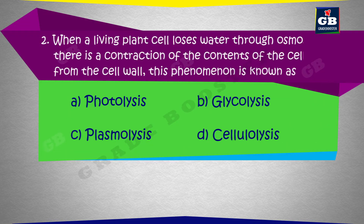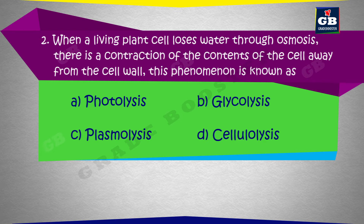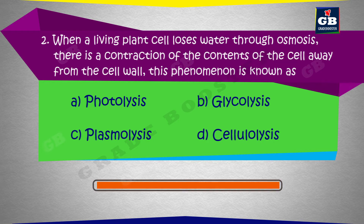When a living plant cell loses water through osmosis, there is a contraction of the contents of the cell away from the cell wall. This phenomenon is known as: a) photolysis, b) glycolysis, c) plasmolysis, d) cellulolysis.